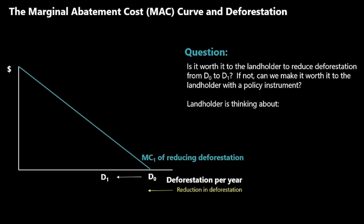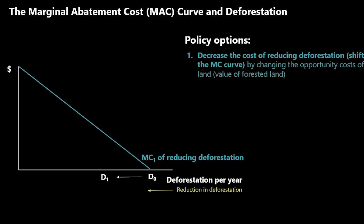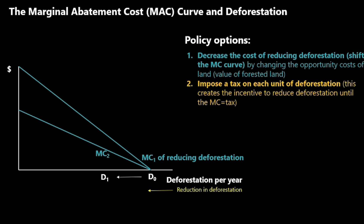In this analysis, the landholder is thinking about how much income is lost and how much value is gained. Policy options include decreasing the cost of reducing deforestation — that is, shifting the marginal cost curve to make it cheaper to reduce deforestation. This could be accomplished by influencing the opportunity cost of land, that is, the value of forested land. We could also impose a tax on each unit of deforestation, which creates the incentive to reduce deforestation until the marginal cost of reducing deforestation equals that tax.